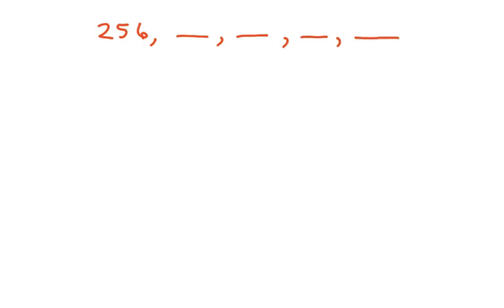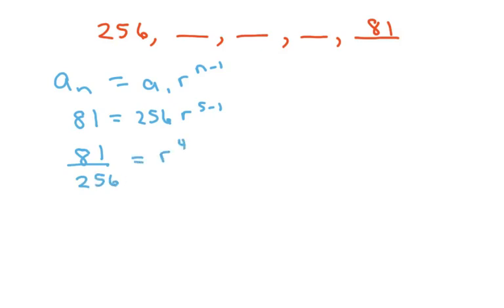We're going to use a_n, which is your last term, equals your first term times your common ratio to the n minus 1. So basically, we're going to write this as 81 equals 256 times r to the 5 minus 1. So this is going to be 81 over 256 equals r to the 4th. Now to solve for r, you're going to fourth root both sides. Don't forget your plus and minus.